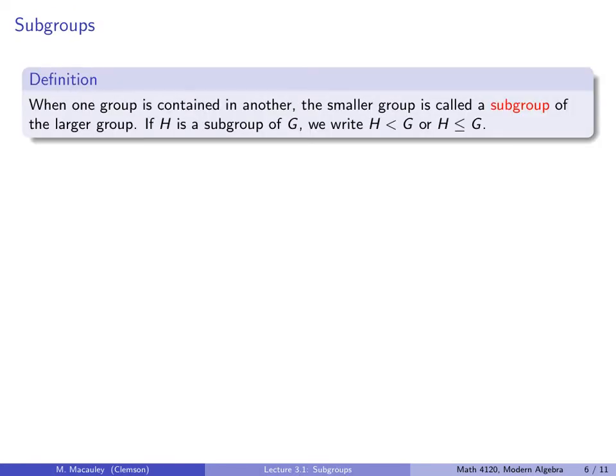Here is a formal definition. When one group is contained in another, the smaller group is called a subgroup of the larger group. If H is a subgroup of G, this is how we write it, H less than G, or we use this notation. And I want to emphasize that these things mean exactly the same thing. So unlike numbers, where these symbols mean different things, these mean the same thing. Just because we don't have an equal sign under here does not mean that these things are necessarily different groups.